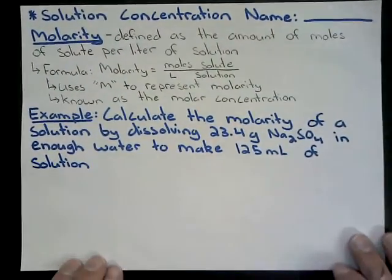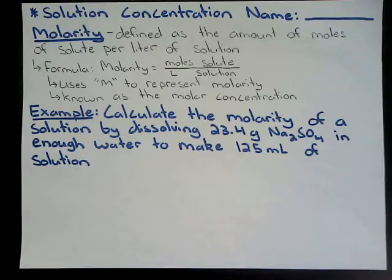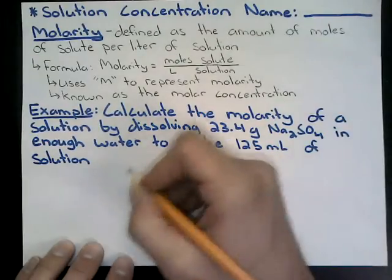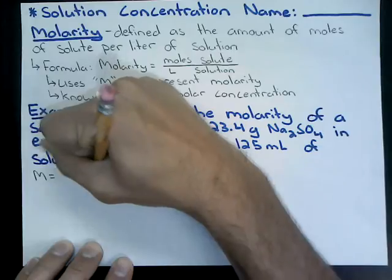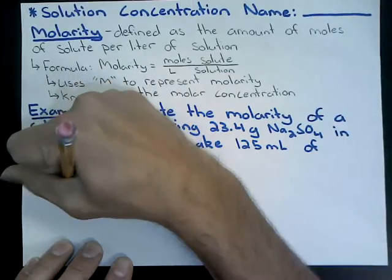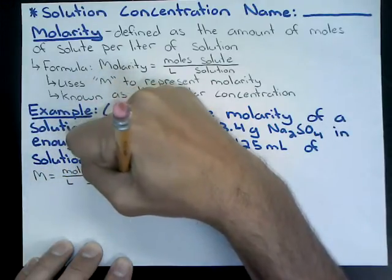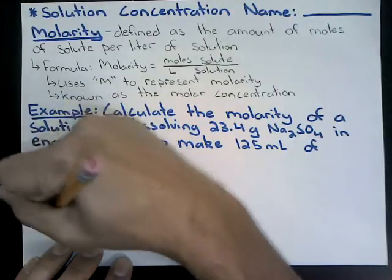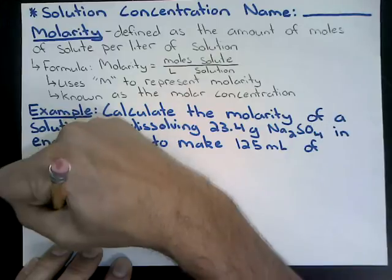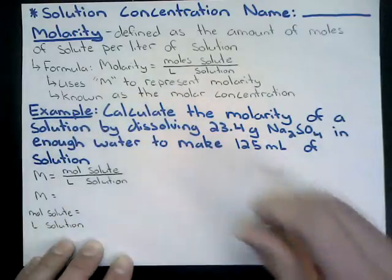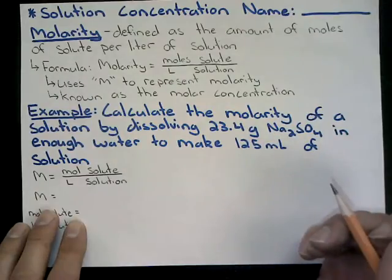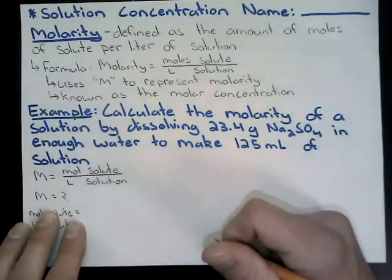Let's apply this to an example. We want to calculate the molarity of a solution by dissolving 23.4 grams of sodium sulfite in enough water to make 125 milliliters of solution. We start with our formula for molarity: M equals moles of solute divided by liters of solution. We write down all quantities involved and plug in what we know to solve for what we don't know. Molarity is our unknown.